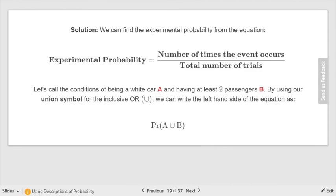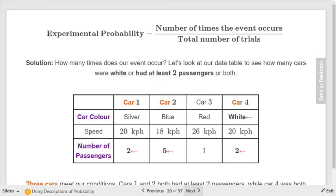Remember, experimental probability is the number of successes over the number of trials. We're talking about or here, so that means union. So the probability of A union B. They did A and B because they let A be the probability of a white car, B be the probability of at least two passengers. That way they didn't have to write as much as I did. I wrote it out in words. They're using symbols to represent each one, which is perfect as long as you define it somewhere.